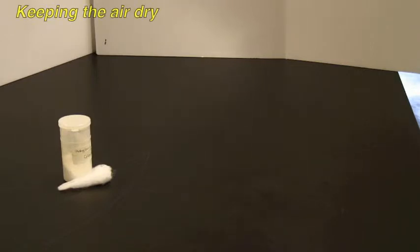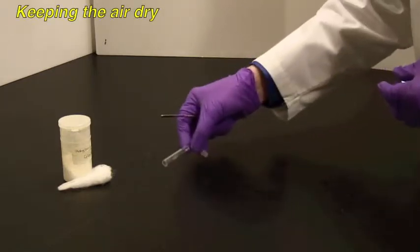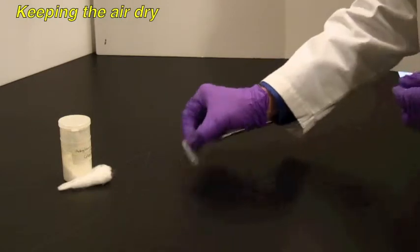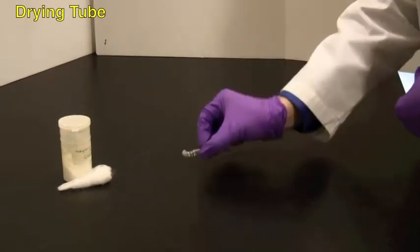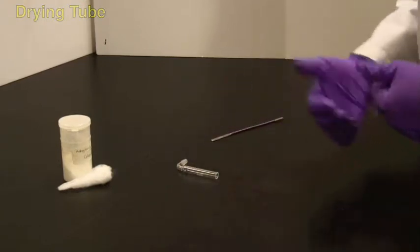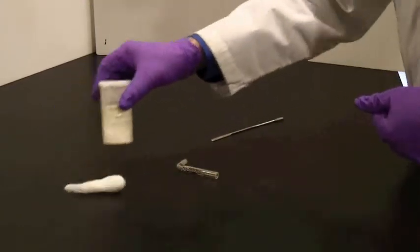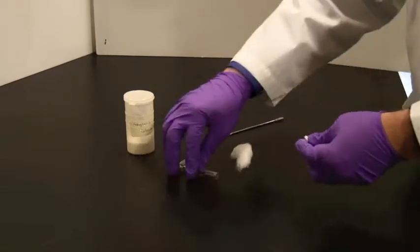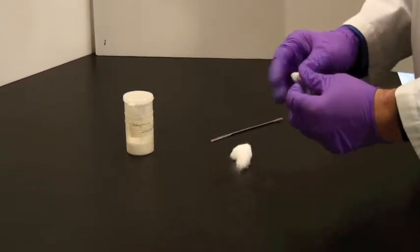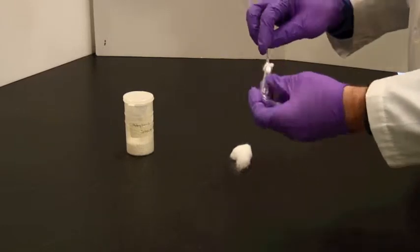The first thing to dry, actually, is the air, and the way to keep the air dry is to use this. It's called, oddly enough, a drying tube. This is the way that air enters your apparatus, and you fill it with an anhydrous salt, which keeps it dry, that is, it removes the moisture from the atmosphere.